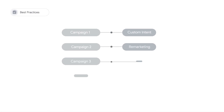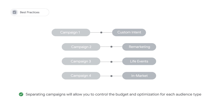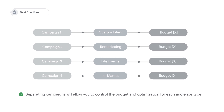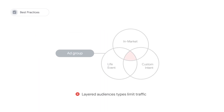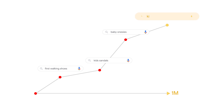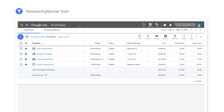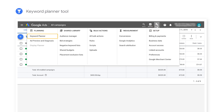It is best practice to use separate audience types in separate campaigns. Separating campaigns will allow you to control the budget and optimization for each audience type. Audience types should not be layered on top of one another since it can limit traffic. Also note that custom intent campaigns require using keywords with a total volume larger than 1 million monthly queries. If the volume is smaller, we recommend using other intent-based or remarketing audience types. If you want insights on volume potential, you can use the Keyword Planner tool.